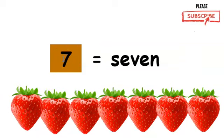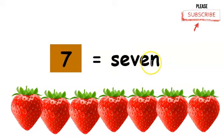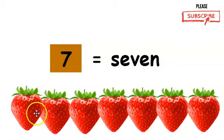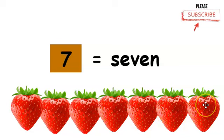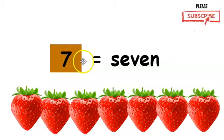This is number seven. This is how you write the word seven. We will see how many strawberries we have. One, two, three, four, five, six, seven. We have seven strawberries. Seven.